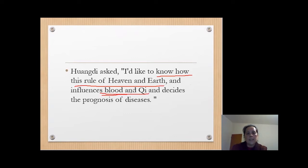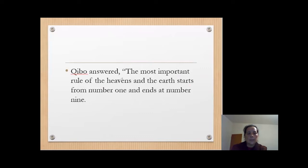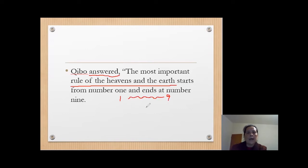Huang Di wants to know how to make a decision — like if a patient has illness, will they recover or not? That's a kind of prognosis knowledge. Then Qibo answers: the most important ruler of heaven and earth starts from number one and ends at number nine. That's the secret — from number one to number nine, that's the important ruler of heaven and earth.